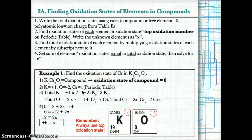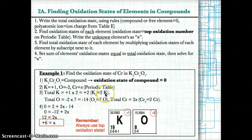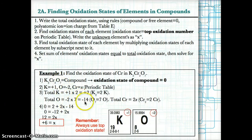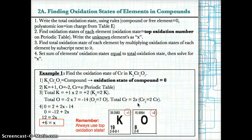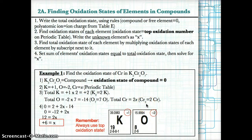In step three, we find the total oxidation state of each element by multiplying by the subscript. K's total: +1 times 2 equals +2, because K has a subscript of 2. O's total: -2 times 7 equals -14, because there are 7 oxygens. Cr's total: X times 2 equals 2X, because Cr has a subscript of 2.